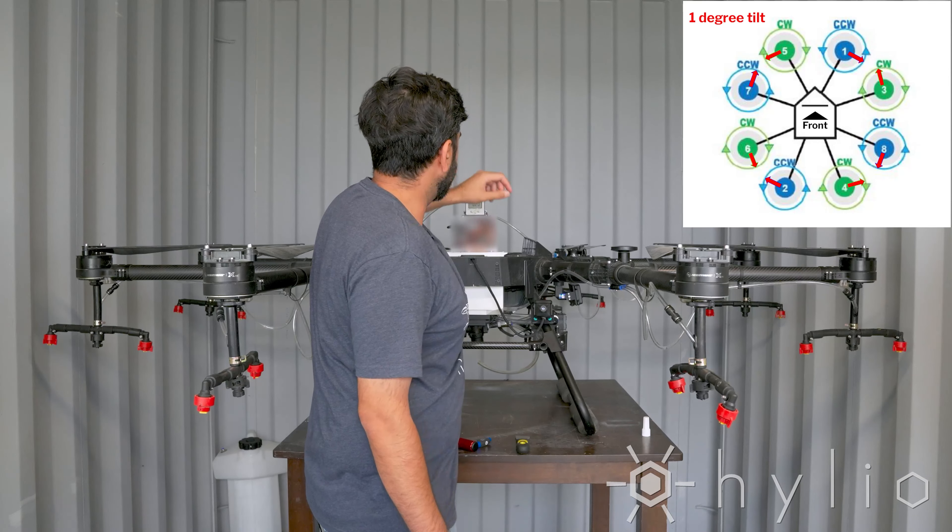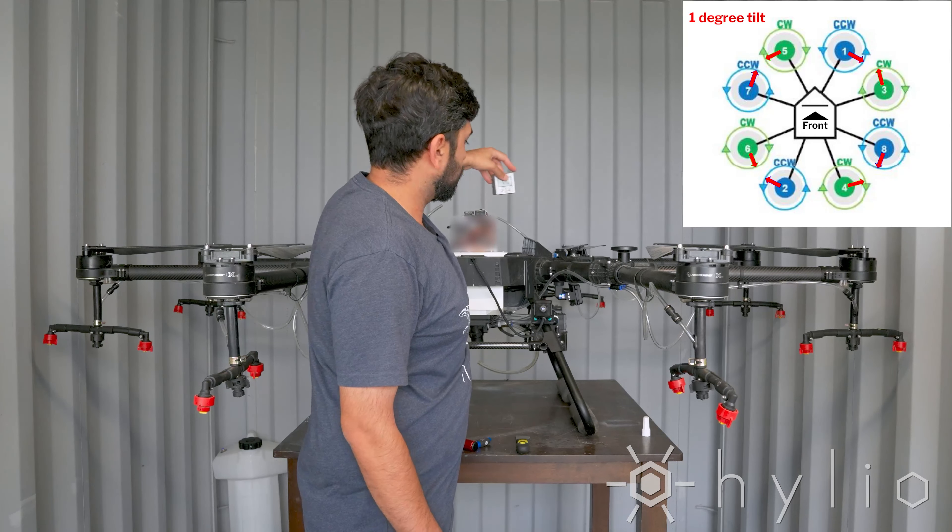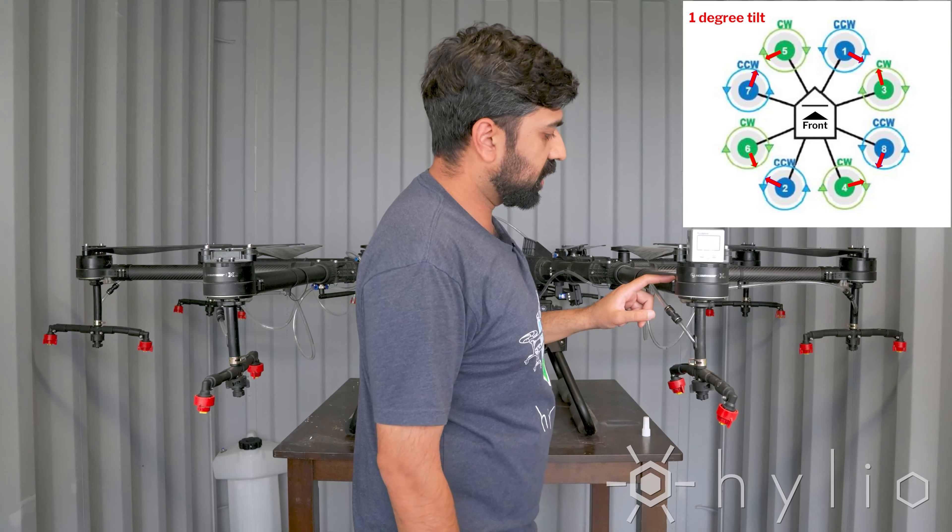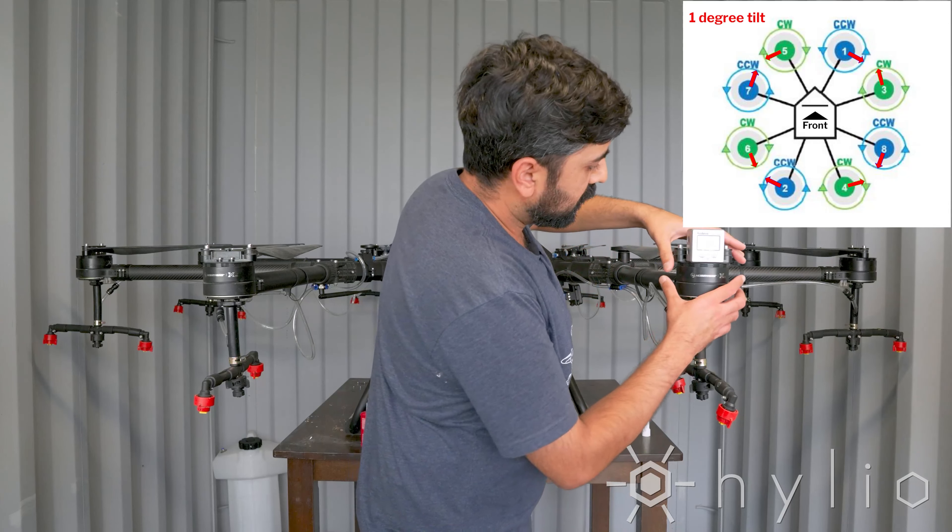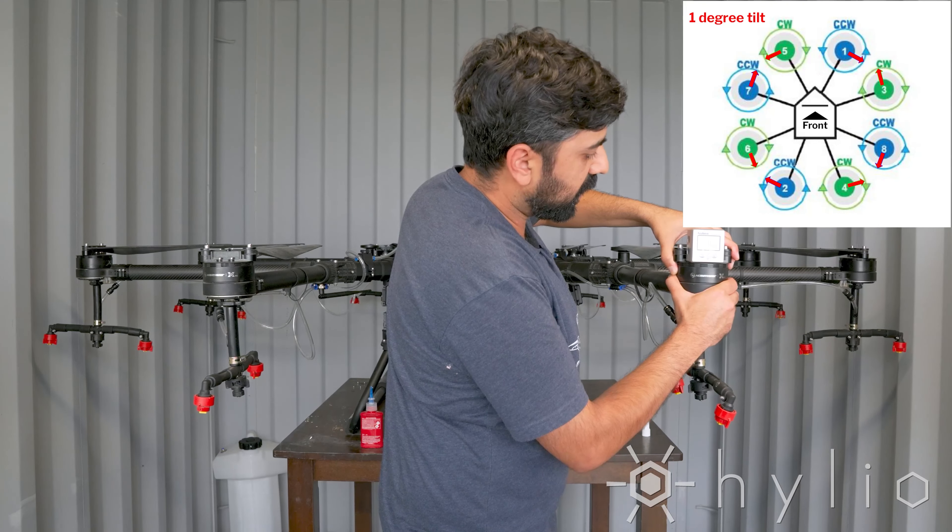Place the level back on the top plate. Make sure it still reads zero degrees. Place it on your motor. Make sure you've already loosened up the four screws here. This is a clockwise motor, so you will be tilting the motor one degree to the right.